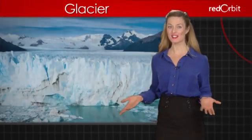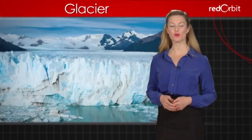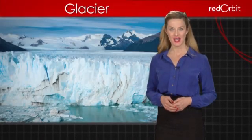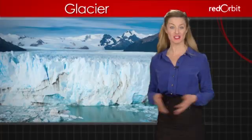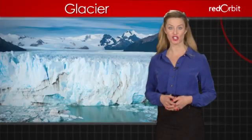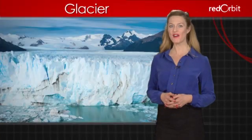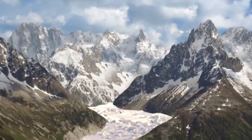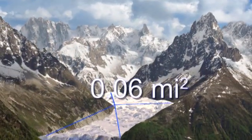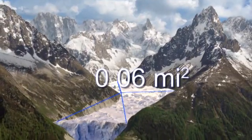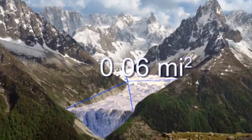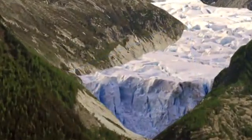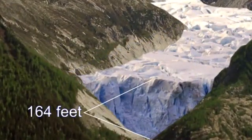A glacier is defined as a slowly moving river of ice. But not all masses of ice are glaciers. To qualify to be a glacier, ice must be at least six hundredths of a square mile in size and over 164 feet thick.